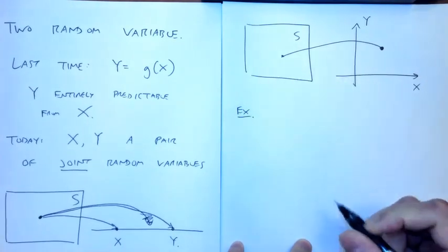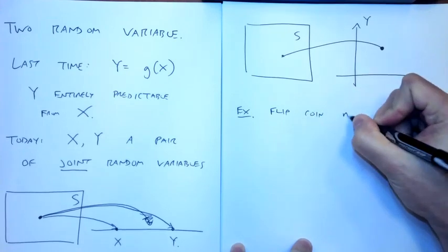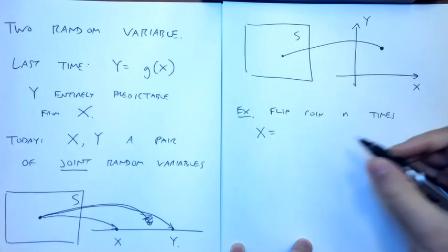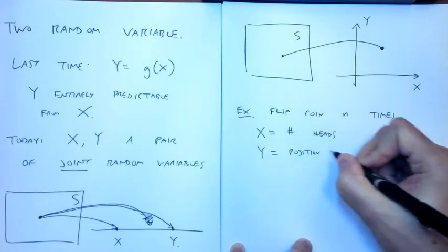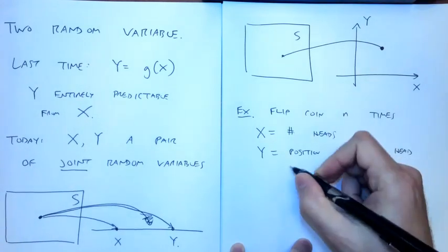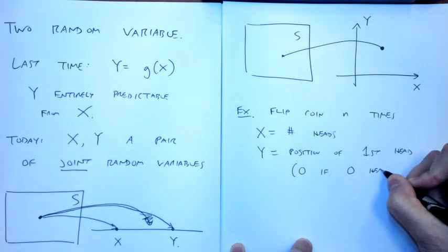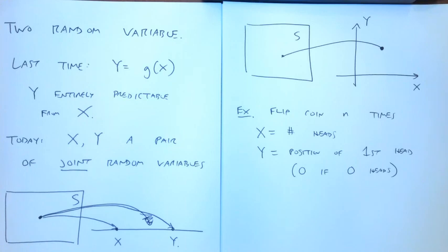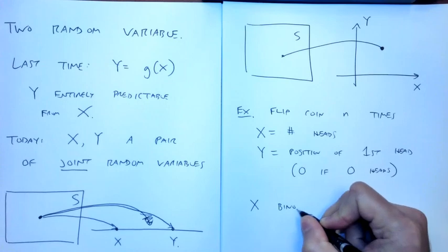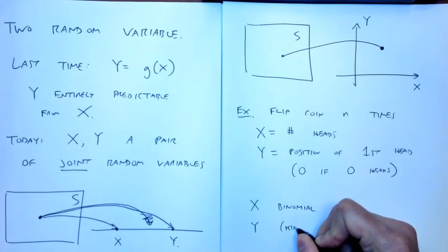To make this more concrete: suppose I flip a coin N times. Let X equal the number of heads and Y equal the position of the first head — which, if there are no heads at all, I'll say is zero. From what we know, X is binomial and Y is kind of geometric. We're flipping until we get our first success, though it's not entirely geometric because we cut things off at N.